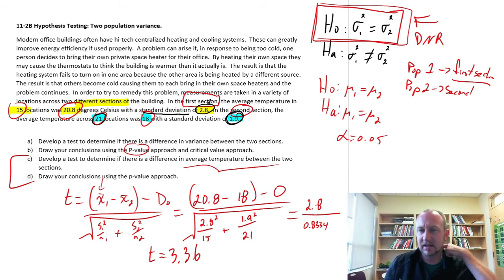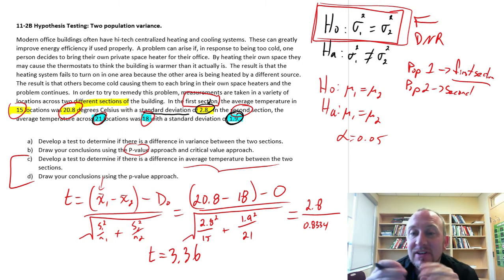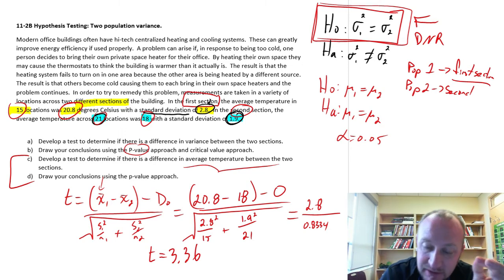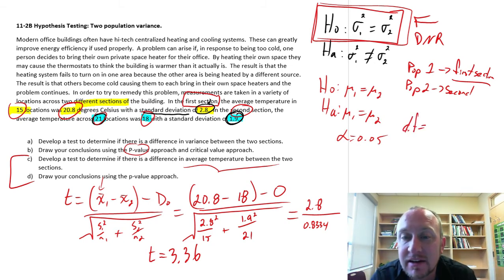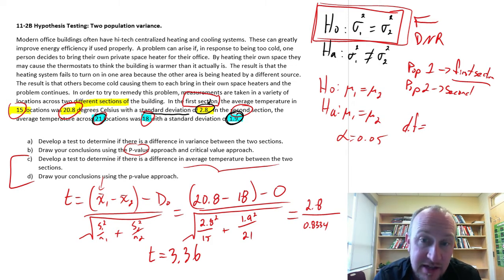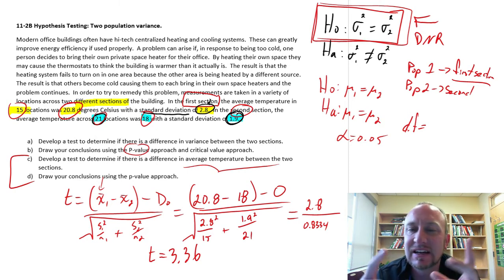Okay, good. So now we have our test statistic. Now, if you remember, we have to concern ourselves with the degrees of freedom. So what are the degrees of freedom here? Well, you remember there are two methods of calculating the degrees of freedom. One is if we assume the variances are unequal, and the other is if we have reason to believe that the variances are equal.